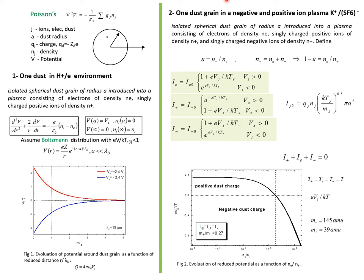The second system that we studied consists of an isolated spherical dust grain of radius A introduced into a plasma consisting of electrons of density n0, singly charged positive ion of density n+ and singly charged negative ion of density n-. Defining this parameter, which is the fraction of negative to positive ion and using the neutrality condition, we can write this equation.